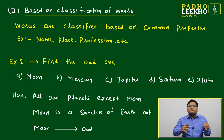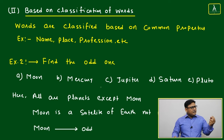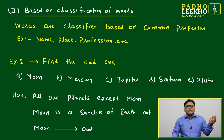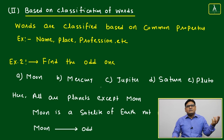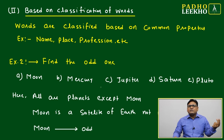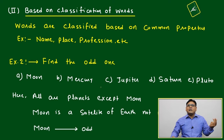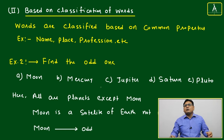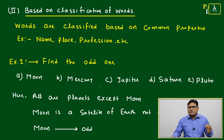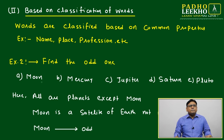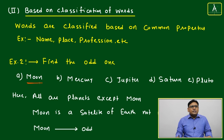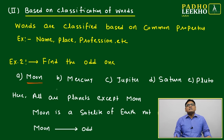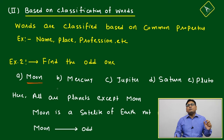Among heavenly bodies, there are further classifications. For example, the sun is a star, the moon is a satellite, and there are planets. There are also higher-level classifications like the Milky Way, which is the name of our galaxy. Here, moon is the only satellite — it is the satellite of Earth.